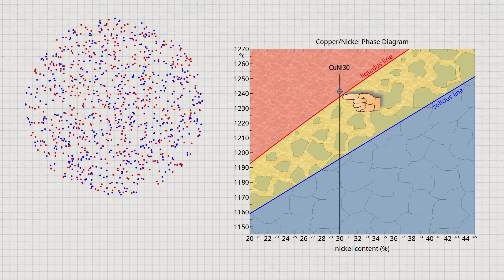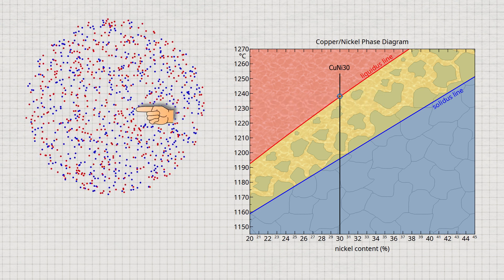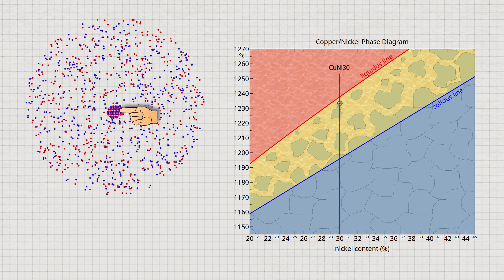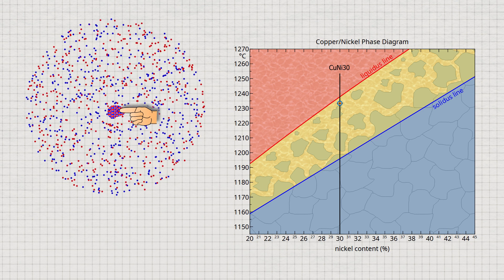When the liquidus line is reached, solidification begins and both components form a common lattice structure. As an example, we consider the formation of such a solid solution from the melt.